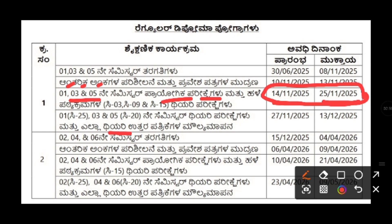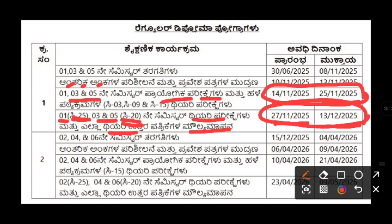The theory exam for C20 and C25 syllabus — C25 applies only to first semester students this year, while C20 applies to third and fifth semester students — will start from 27 November 2025 and end on 13 December 2025. The theory exam timetable will be the same for all colleges.